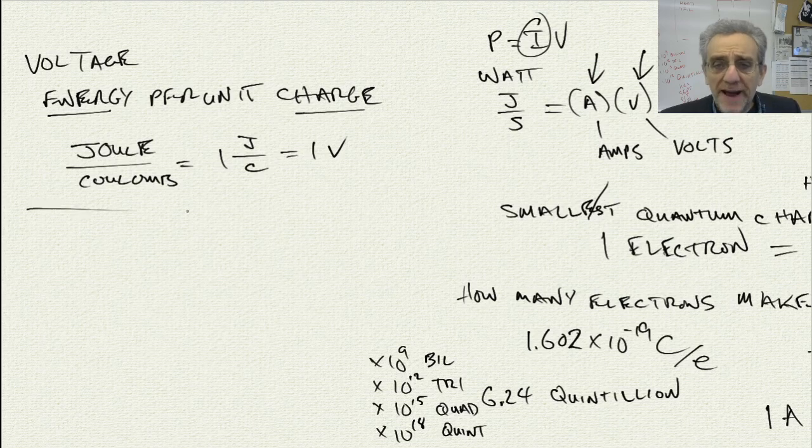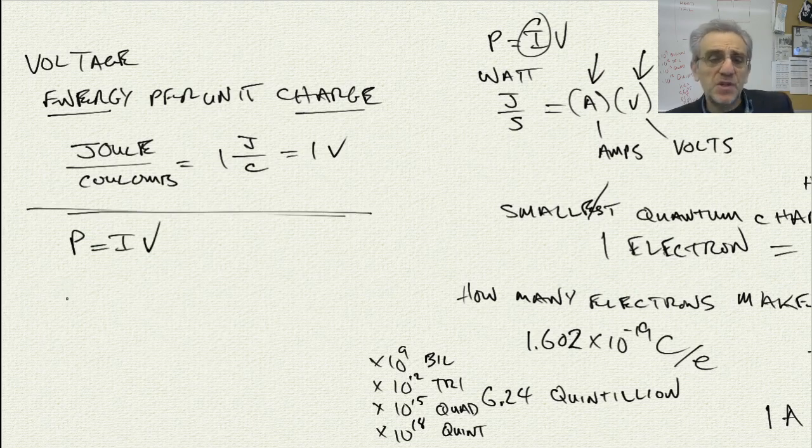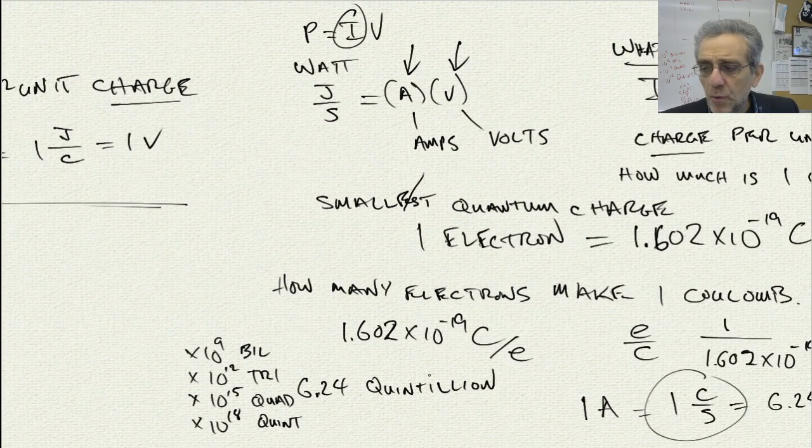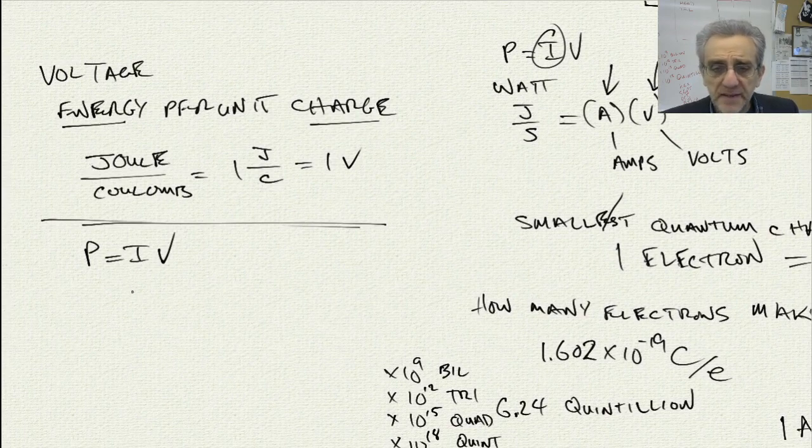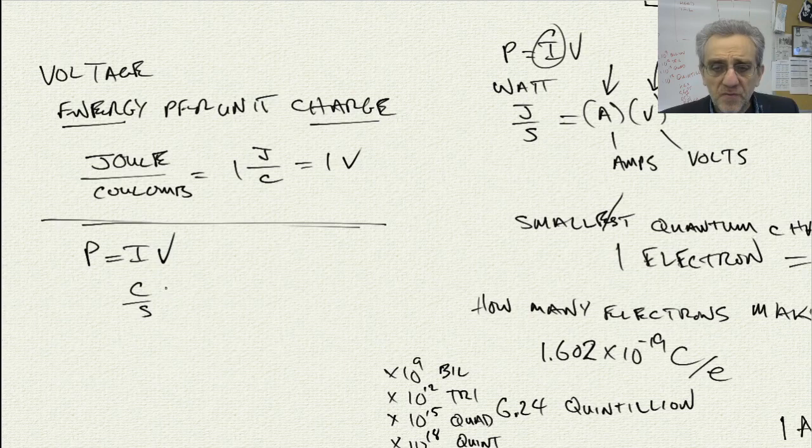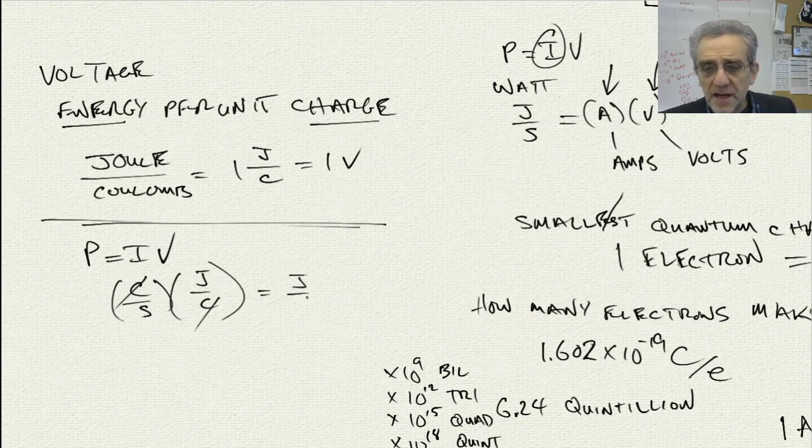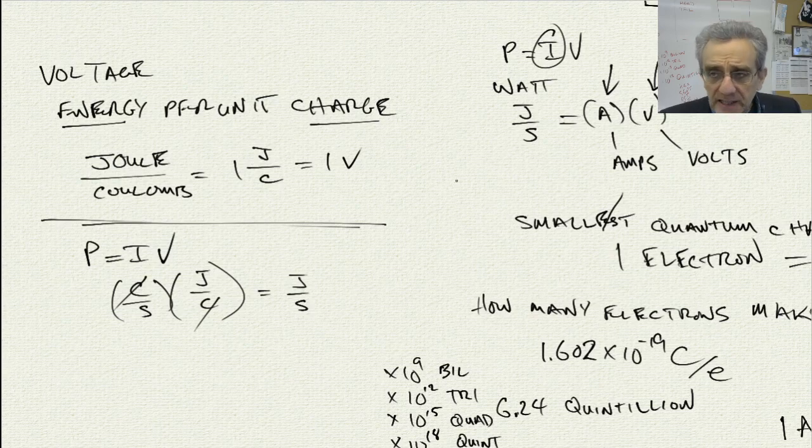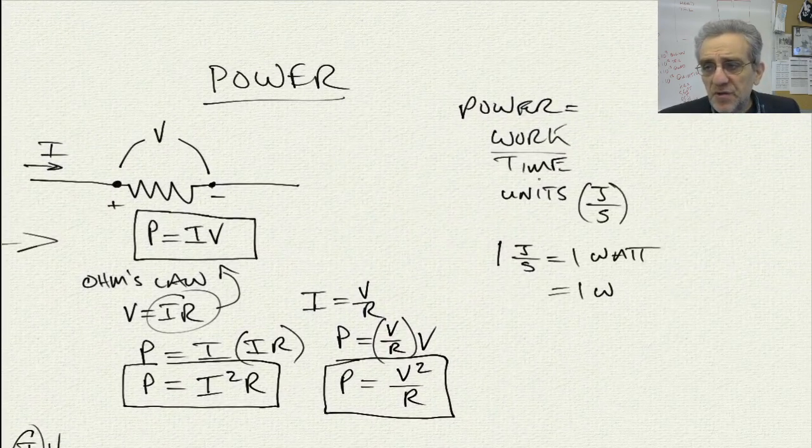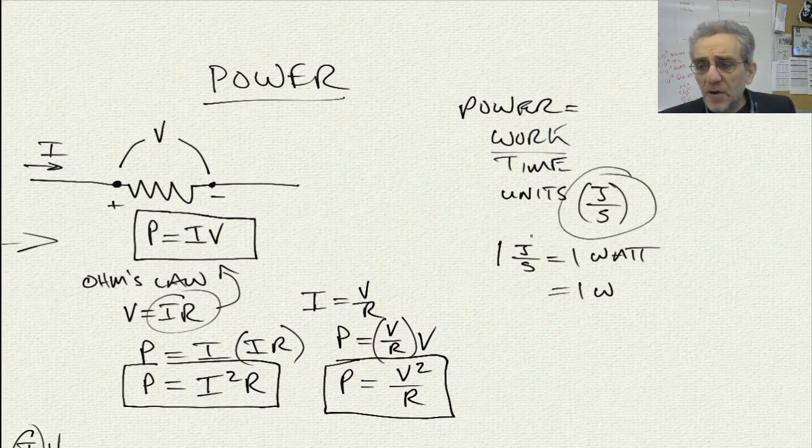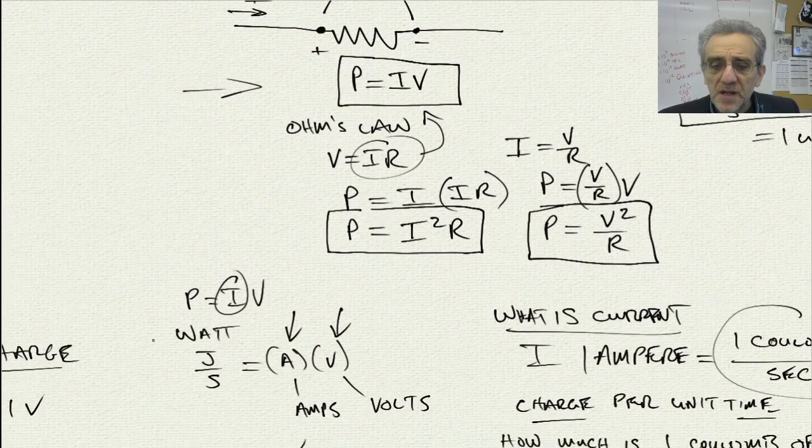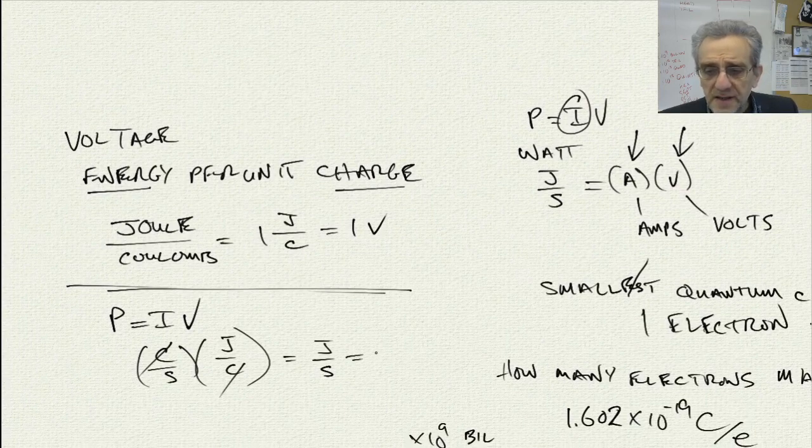So now, if we go back to our measurement of power, and say power equals current times voltage, then we can say, in terms of the units, we can say, well, current is one coulomb per second, and then we multiply that by voltage, which is a joule per coulomb. And you notice, the coulombs cancel out, and we get a joule per second, which is exactly what our original unit of power was. And we now know that one joule per second is one watt.